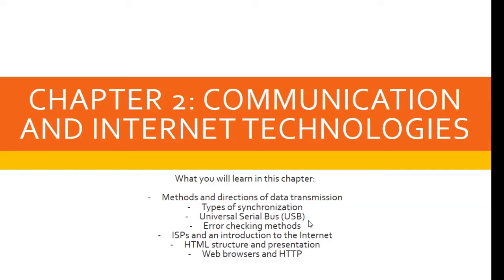Welcome back to the IGCSE Computer Science Code 0478 guide. In this chapter, we will be discussing communication and internet technologies. You will learn about methods and directions of data transmission, types of synchronization, the universal serial bus or USB, error checking methods, ISPs and an introduction to the internet, HTML structure and presentation, and web browsers and HTTP.